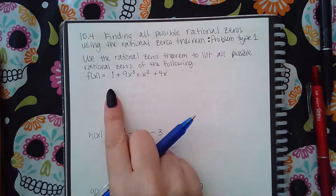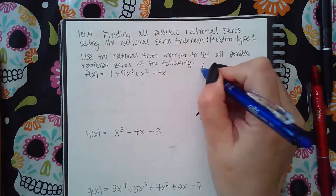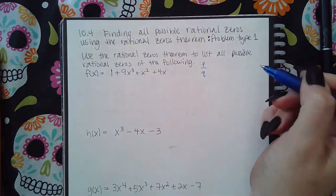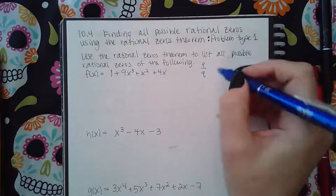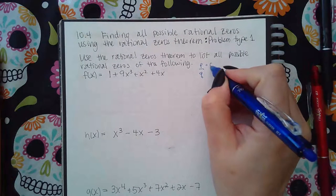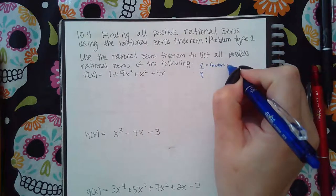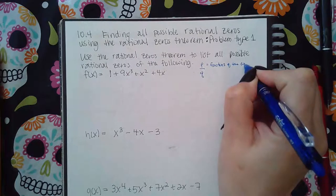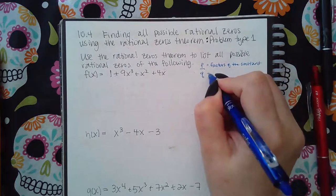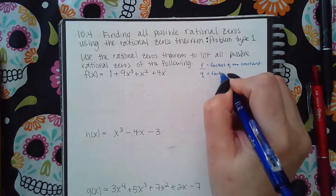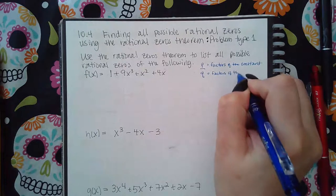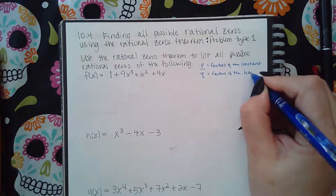Now, how do we do that? It's usually used what's called P over Q. And so you'll see me use this a lot, P over Q. P is the factors of the constant. And then Q is the factors of the leading term or leading coefficient.